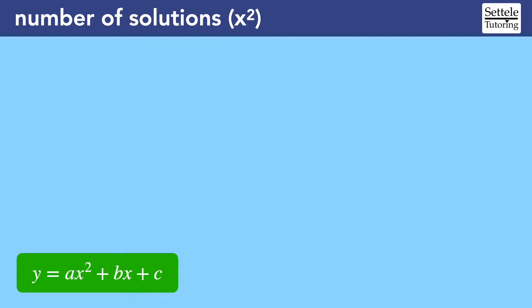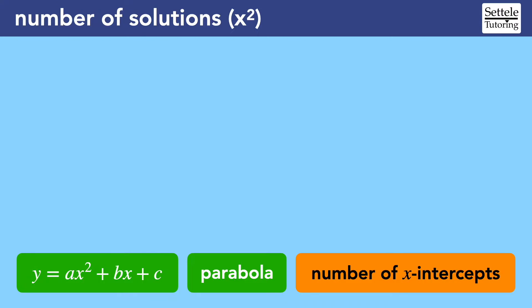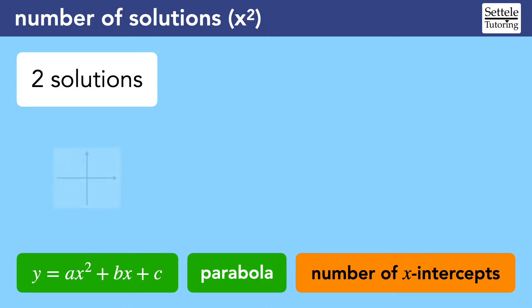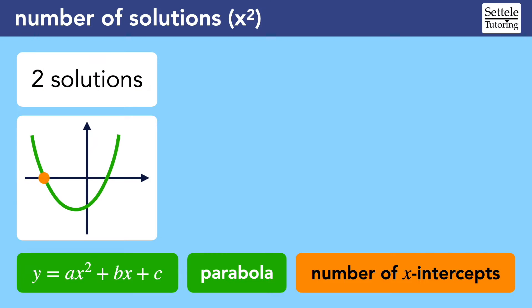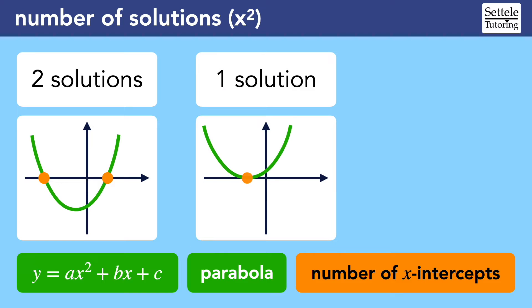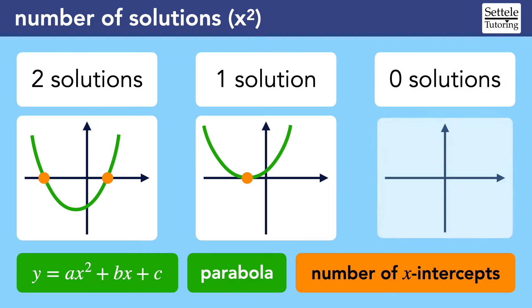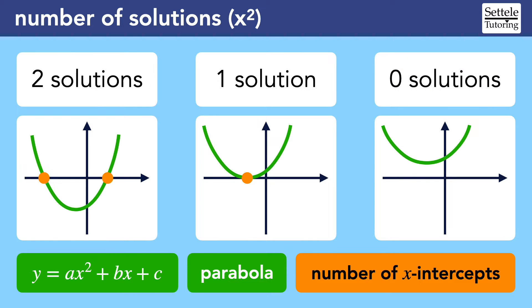When a quadratic equation is written with two variables, an x and a y, then the quadratic will form a parabola. The number of solutions will be the same as the number of x-intercepts for the parabola, and there are only three possible outcomes. There are two solutions when there are two x-intercepts, because the parabola crosses the x-axis. There is one solution when there is one x-intercept, because the parabola bounces off of the x-axis. And there are zero solutions when the parabola curves away from the x-axis and never touches it. This idea forms the basis for all SAT questions that ask about the number of solutions when there's an x-squared equation.